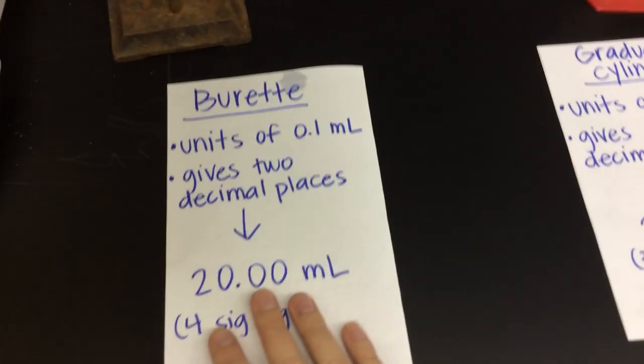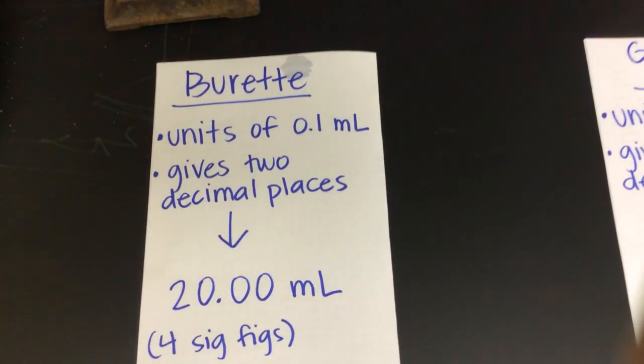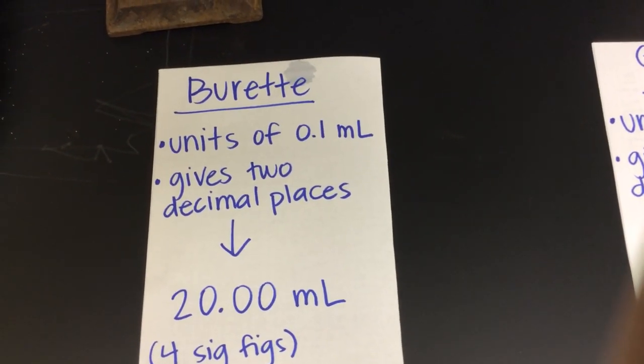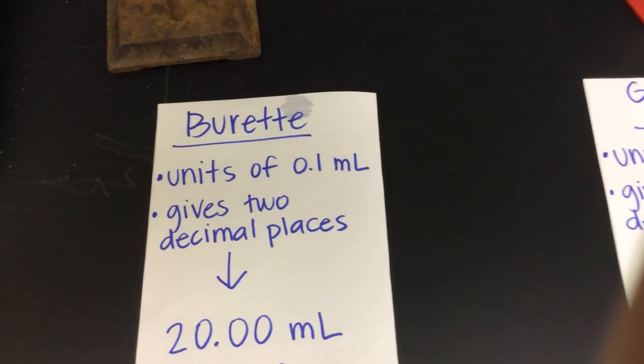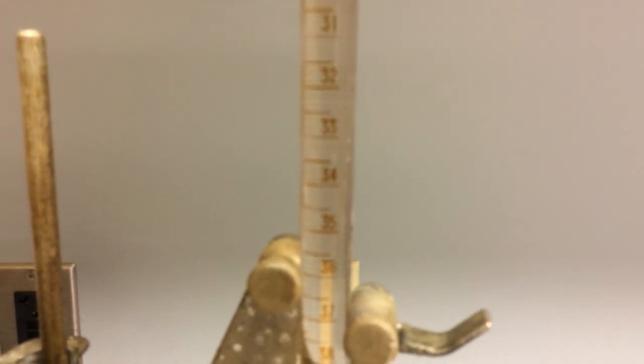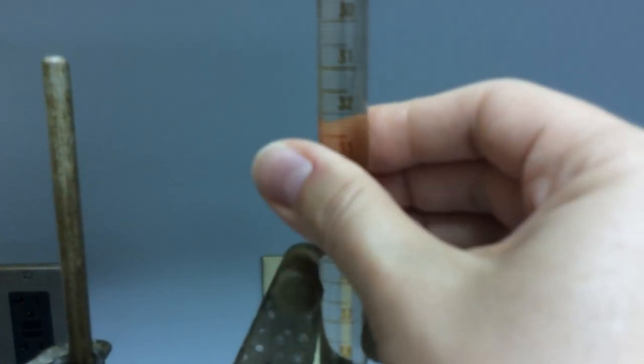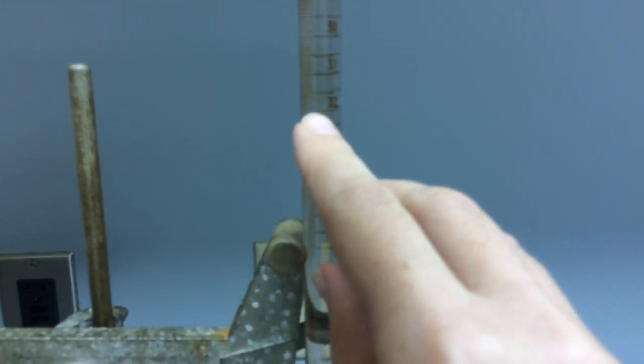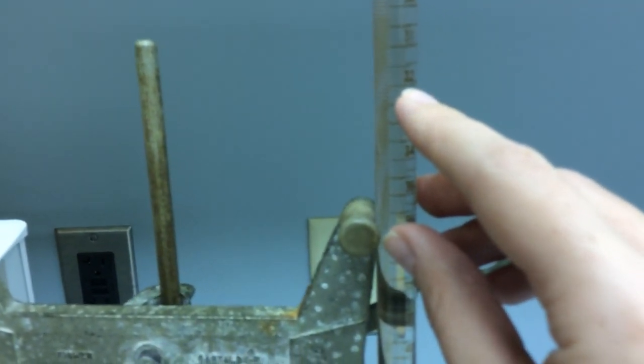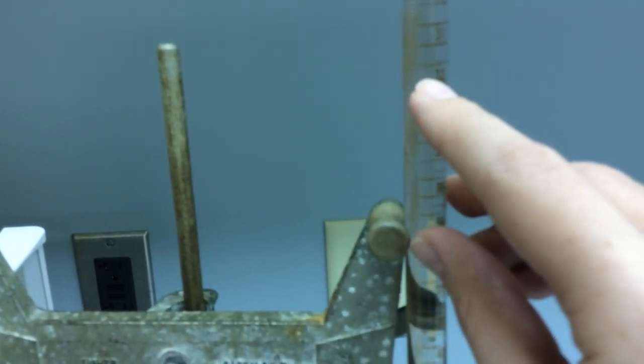The first unit I want to talk about is the burette. The burette is in units of 0.1 milliliters. So that means that when I'm looking at the burette itself, you see the tick marks are in 0.1's. So there's 32, so that would be 32.1, 32.2.